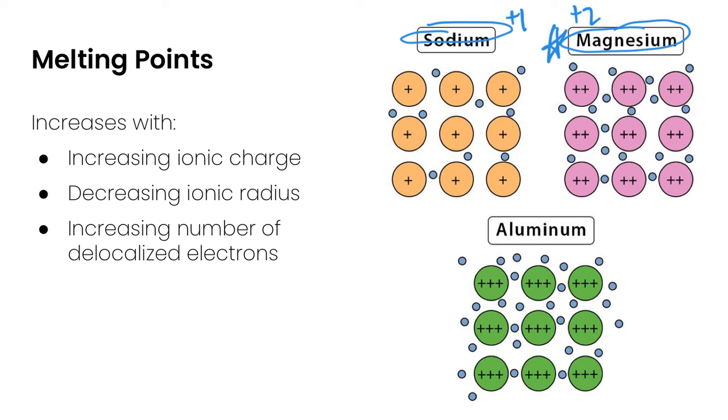Melting points also increase with decreasing ionic radius. So for example, an Mg2+ ion has a smaller radius than a sodium plus ion. That means that the delocalized electrons in the magnesium ion are going to be closer to the positive ions, so they're going to be more strongly attracted, meaning that the Mg2+ ion is going to have a higher melting point than the larger sodium plus ion would.